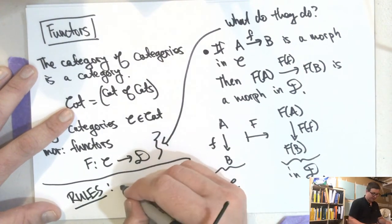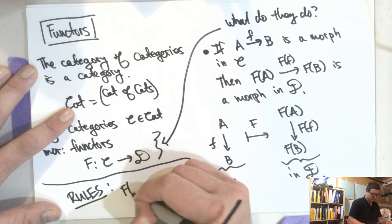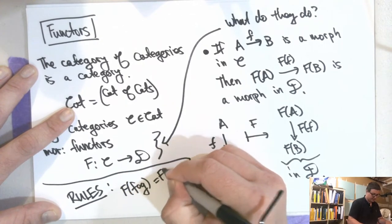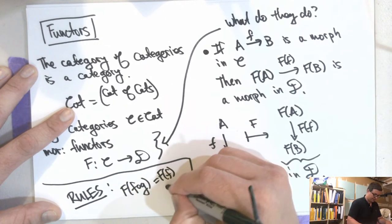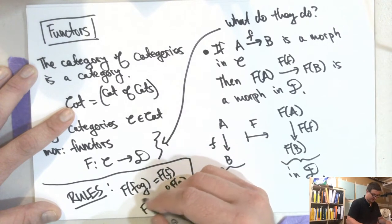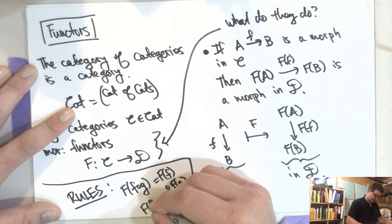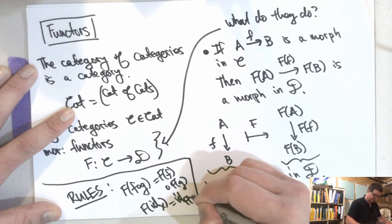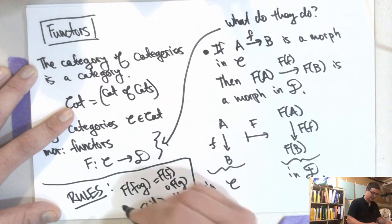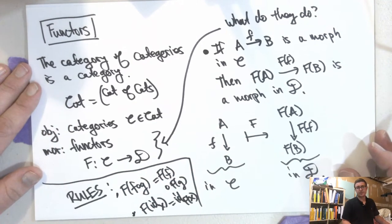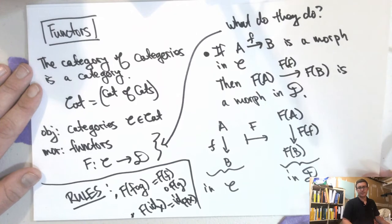The rules are: F(f ∘ g) = F(f) ∘ F(g), and F(id_X) = id_{F(X)}. In other words, identities go to identities and composition is respected. That's pretty much it.